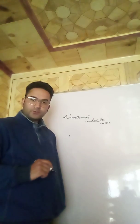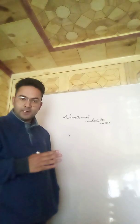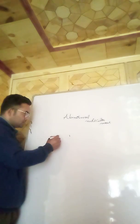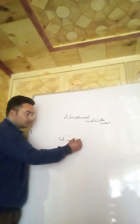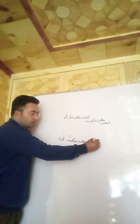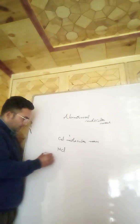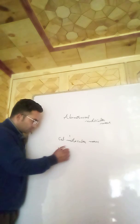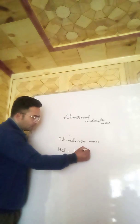Assalamu alaikum warahmatullahi wabarakatuh. Today's topic is related to abnormal molecular mass. Abnormal molecular mass is contrasted with calculated molecular mass. For example, HCl — its molecular mass is calculated from the sum of its atomic masses: hydrogen mass is 1 and chlorine mass is 35.5.